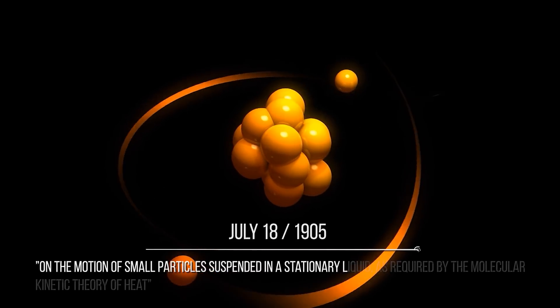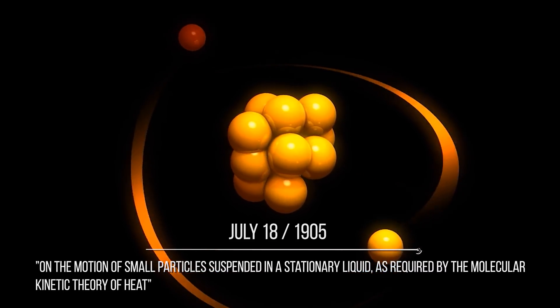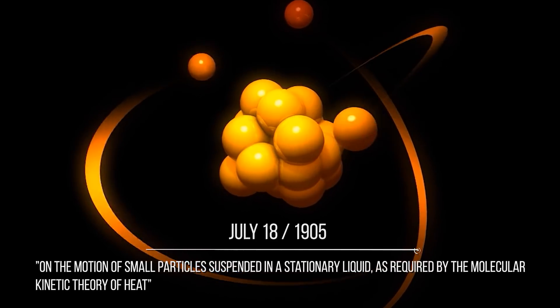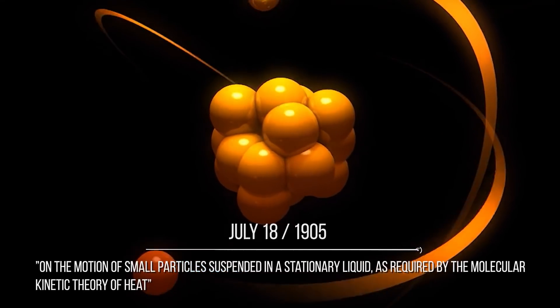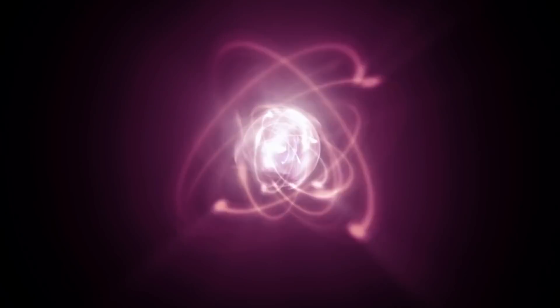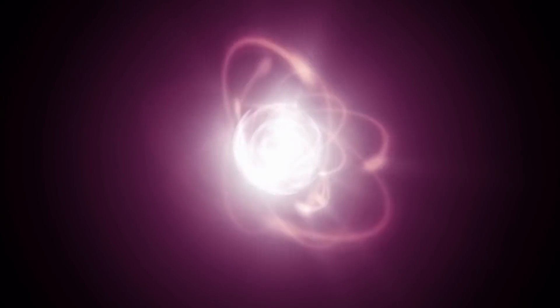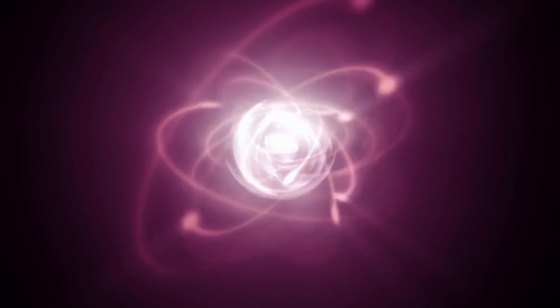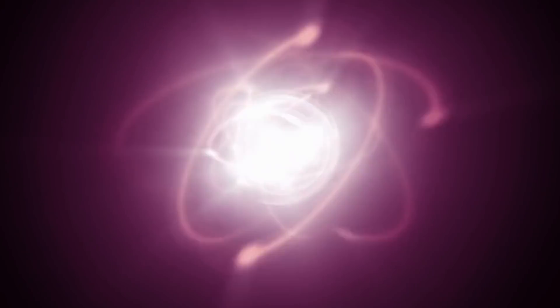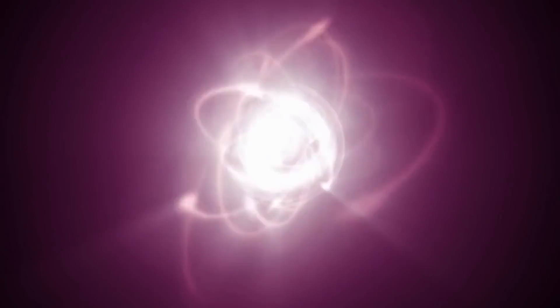On July 18, a second article was published on the motion of small particles suspended in a stationary liquid, as required by the molecular kinetic theory of heat. This today is known as the Brownian motion, and it was very important because it provided strong empirical evidence to the idea that matter is made of atoms. Nowadays we take it for granted, but at the time it was still a controversial issue.